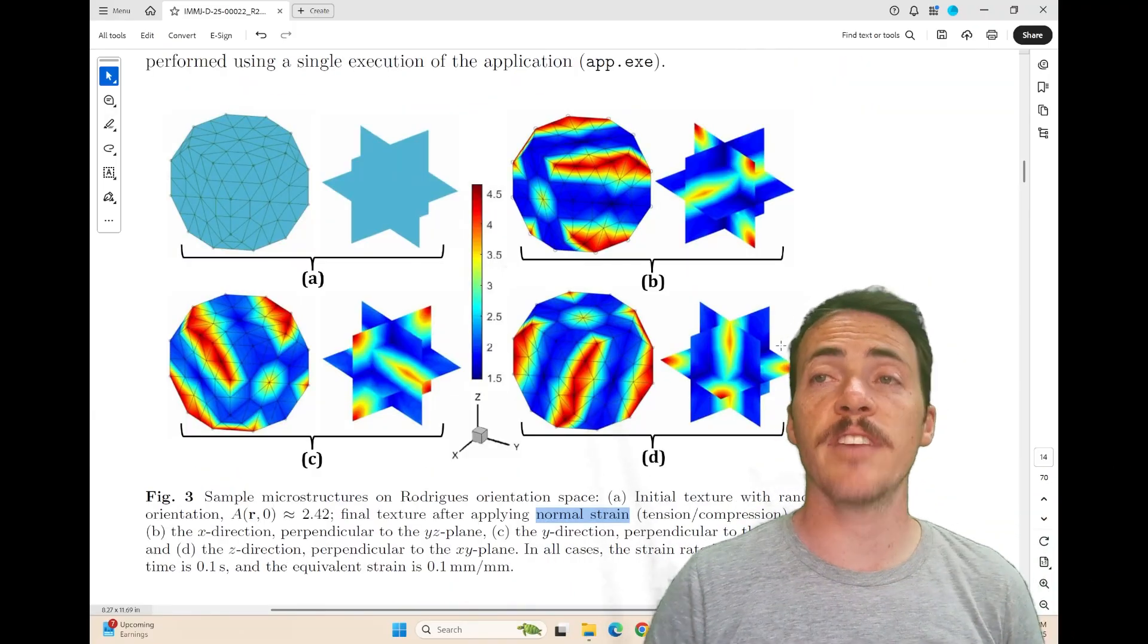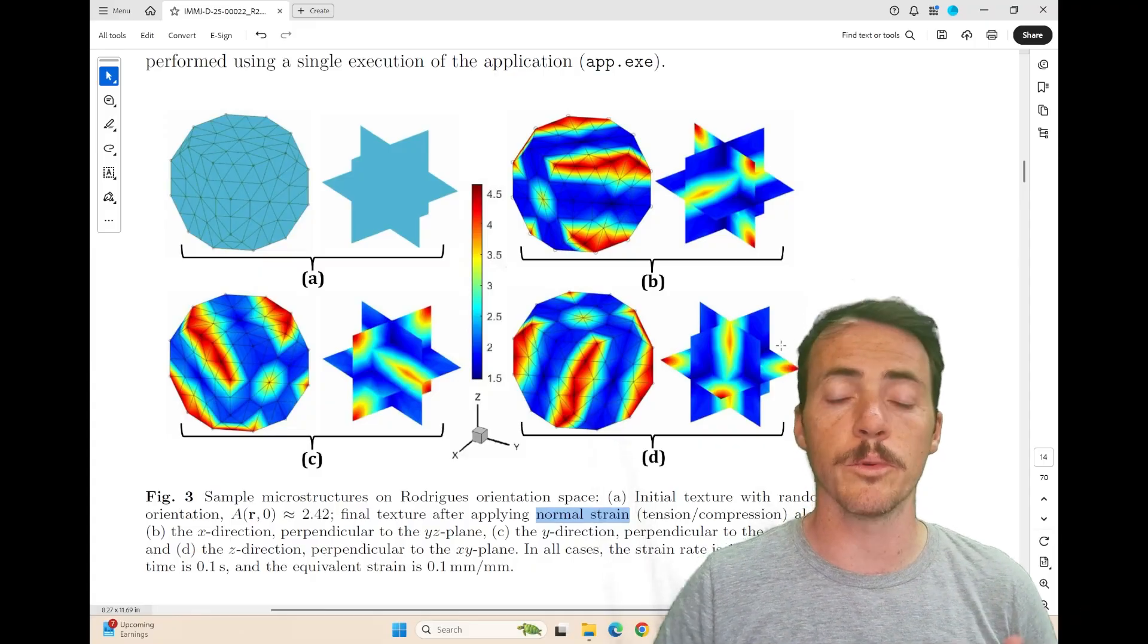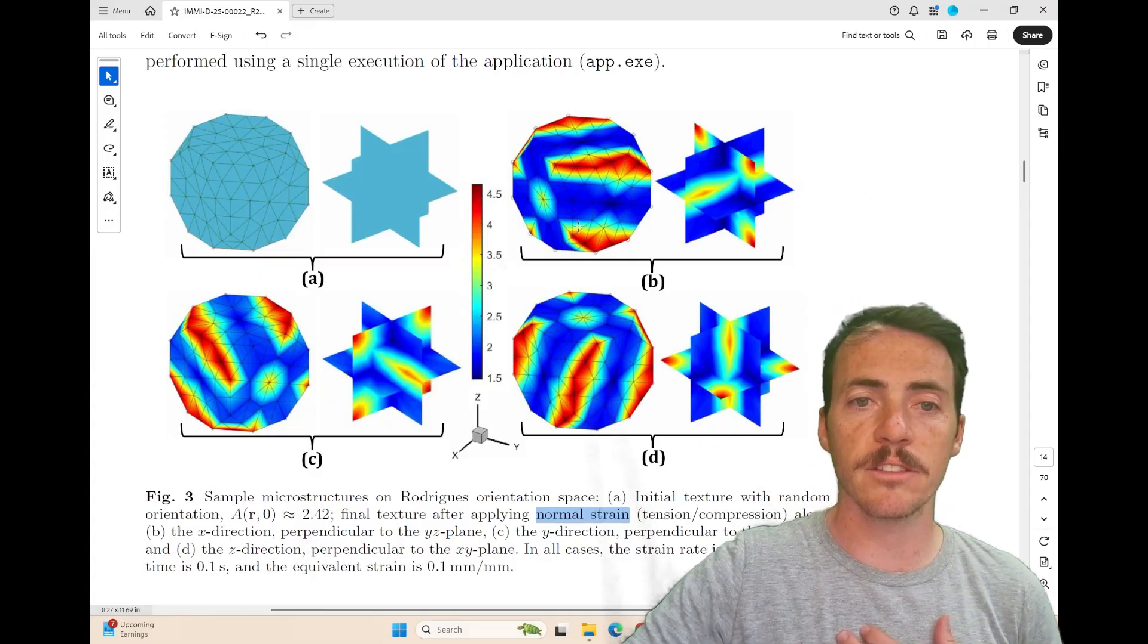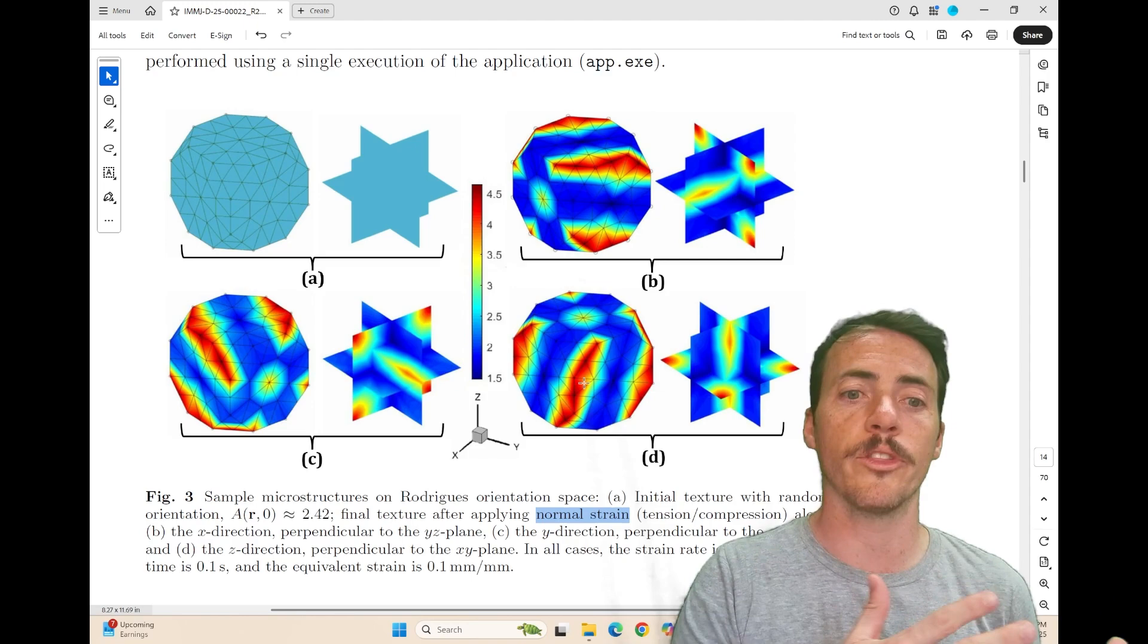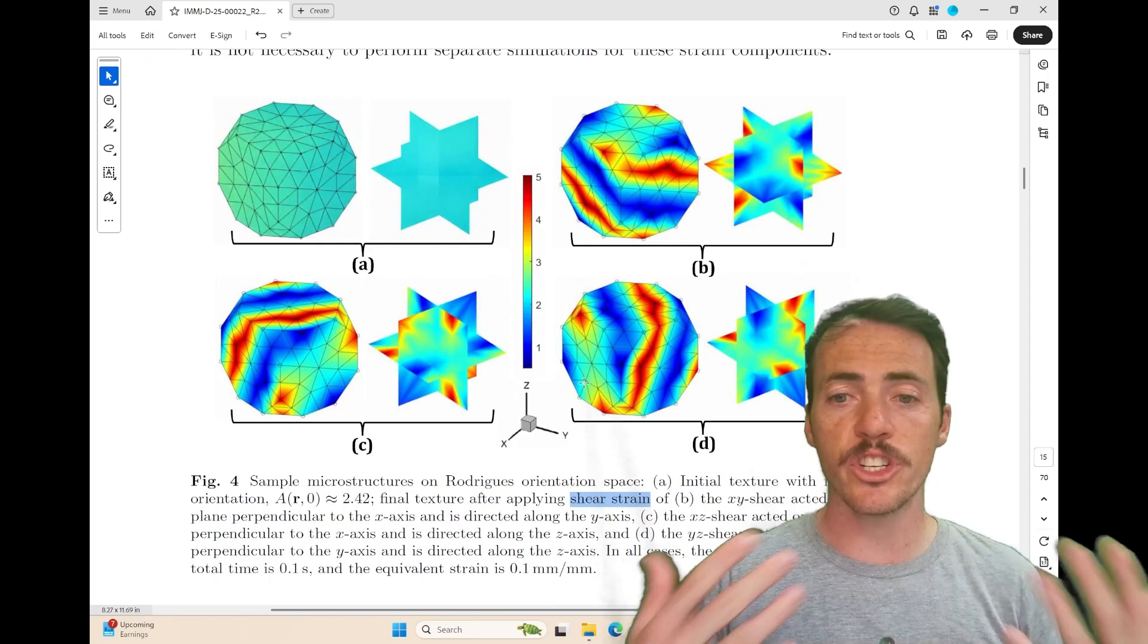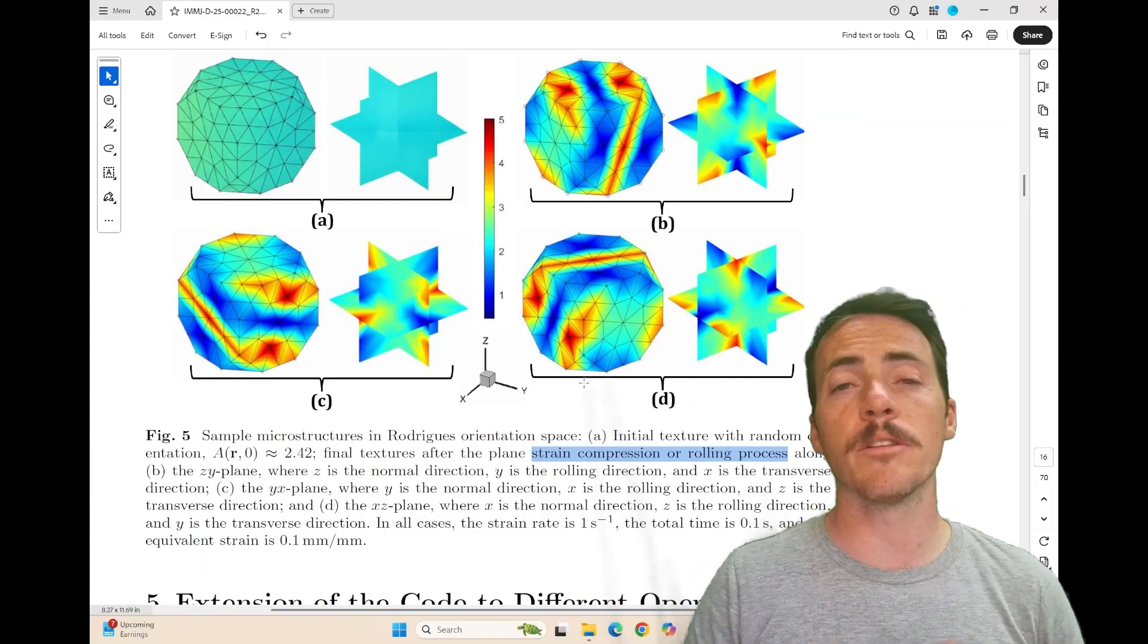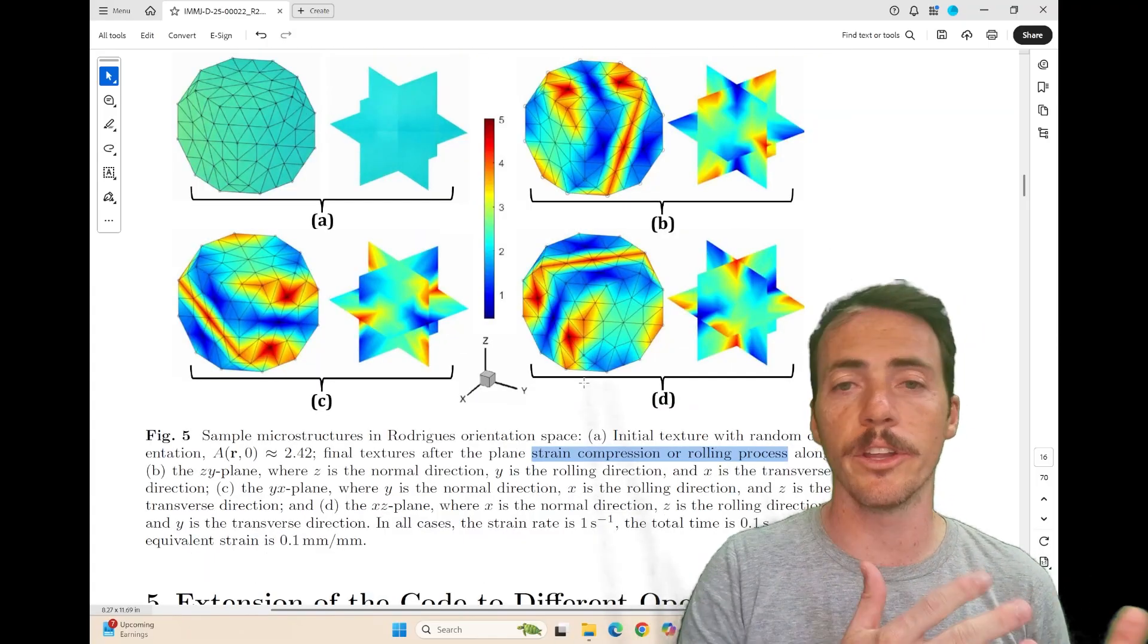So what does it actually look like? Here's some samples of the microstructures in the Rodriguez orientation space. And what you're seeing here, this was normal strain in the x, y, and z axes and what the resulting texture would look like. Similarly, it can be done for shear. So here's shear in the x, y, x, z, and y, z planes. And then strain compression from rolling. Similarly done in three different directions.